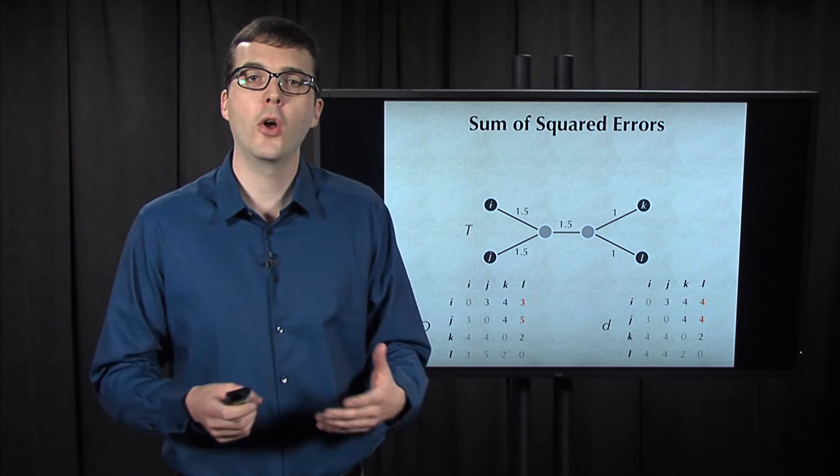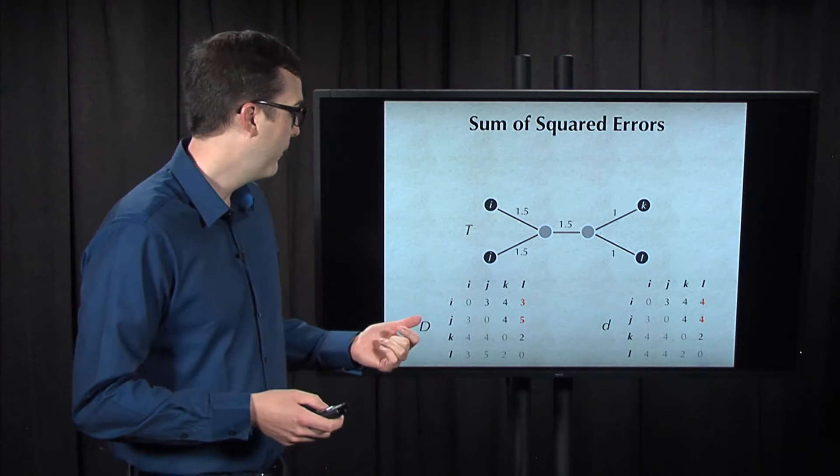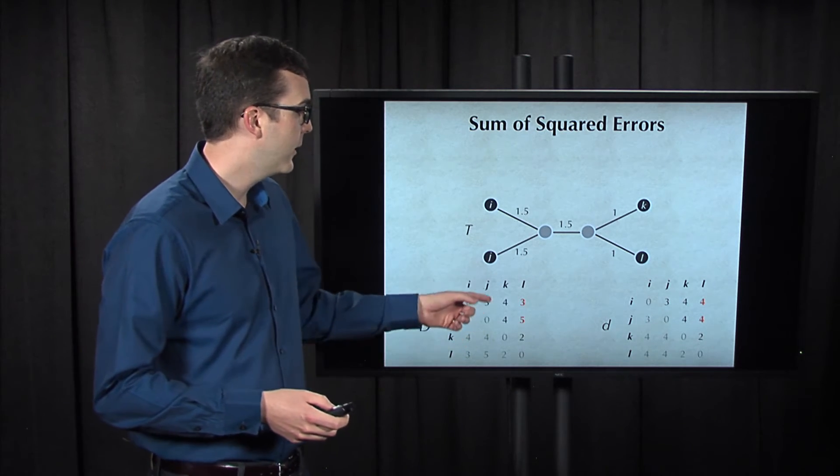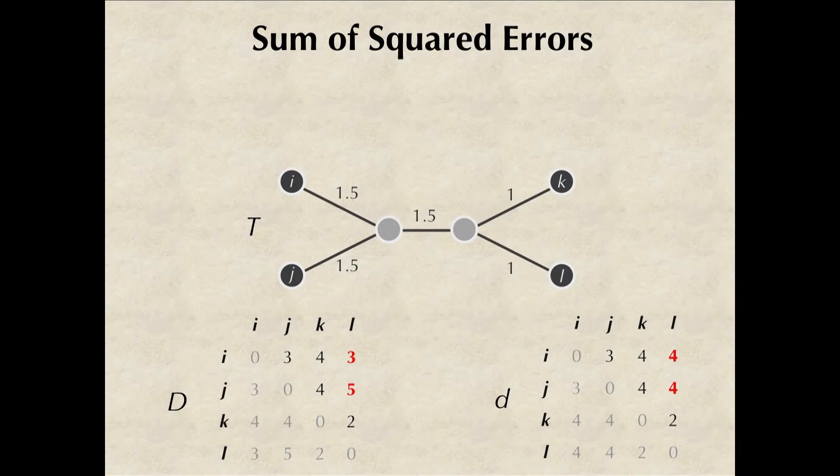Now, for this example, notice that the red values disagree between the matrix and the tree. The distance from i to l, for example, is 3, not 4, which is what the tree indicates. And the distance from j to l is 5, not 4, which is what the tree indicates.